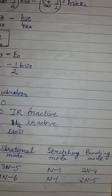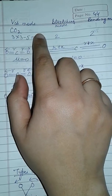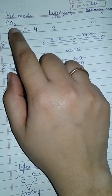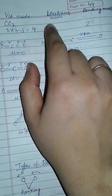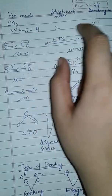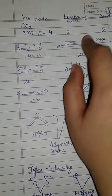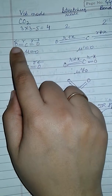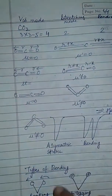For example, for the CO2 molecule, vibrational modes are given by 3n minus 5, that is 3×3 minus 5 equals 4. The stretching mode is n minus 1, so 3 minus 1 is 2. The bending mode is 2n minus 4, that is 2×3 minus 4 equals 2 for CO2.